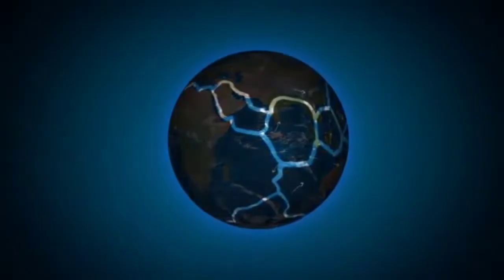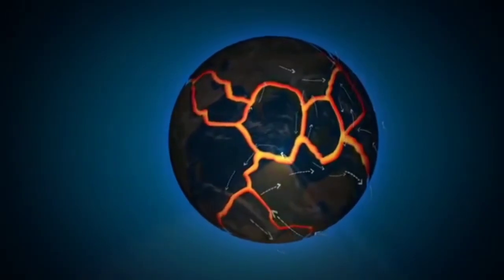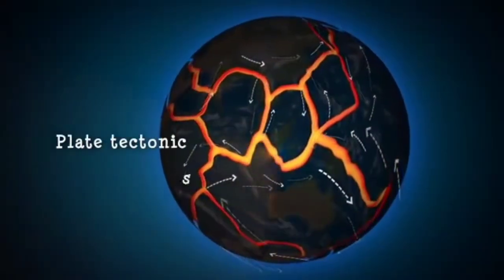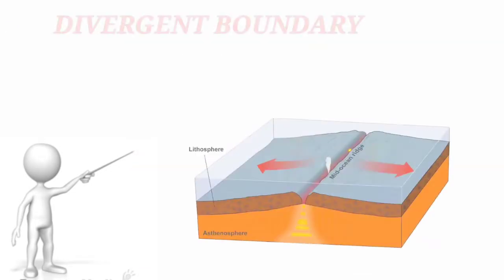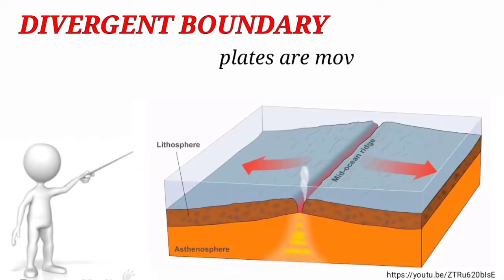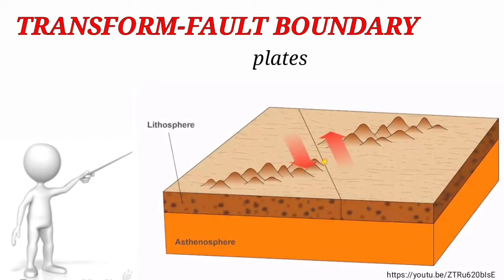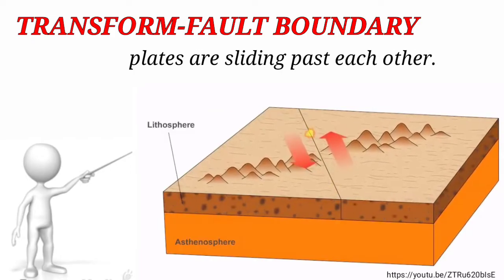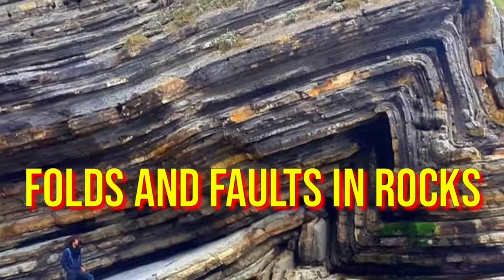If you can recall, the Earth's crust is divided into segments of landmasses called plates. These plates are constantly moving in different directions, creating three types of plate boundaries: the convergent boundary, where plates move towards each other; the divergent boundary, where plates move away from each other; and the transform fault boundary, where plates are sliding past each other. This movement leads to the deformation of the Earth's crust, creating folds and faults in rocks.